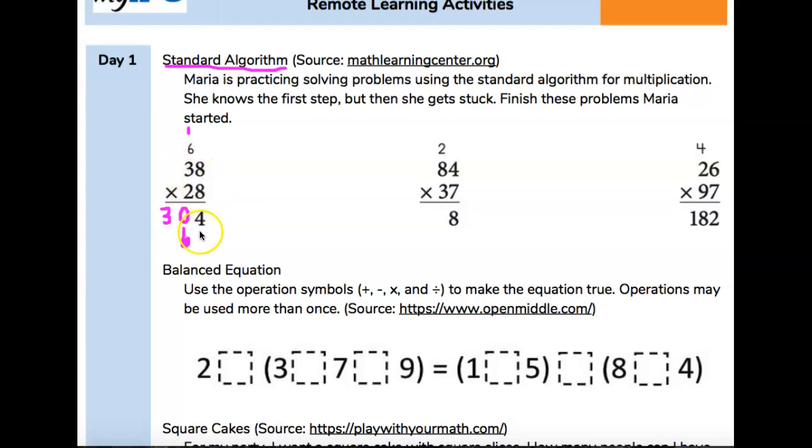So 2 times 8. Now, a lot of students like to put a 0 here as a placeholder, and that's okay. 2 times 8 is 16. Put down your 6, carry your 1. Then you go back to the 2. 2 times 3 is 6, plus 1 is 7. It goes in this column. Then you just draw a line, and add these two together.